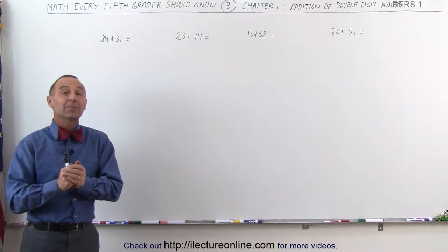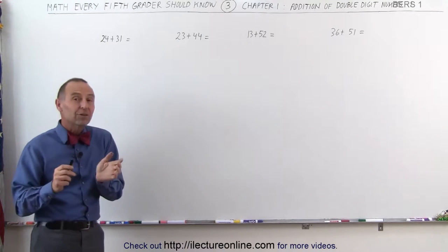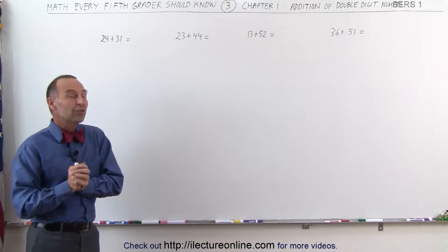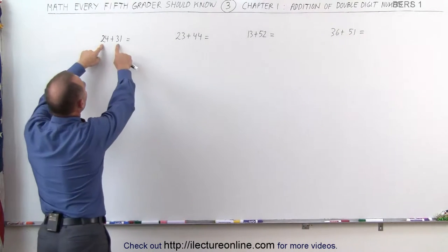Welcome to ElectronLine. Now let's add up double-digit numbers together. There's different kinds of situations that you might run into. In this particular case, we'll call that Case 1, where you look at the first two numbers.